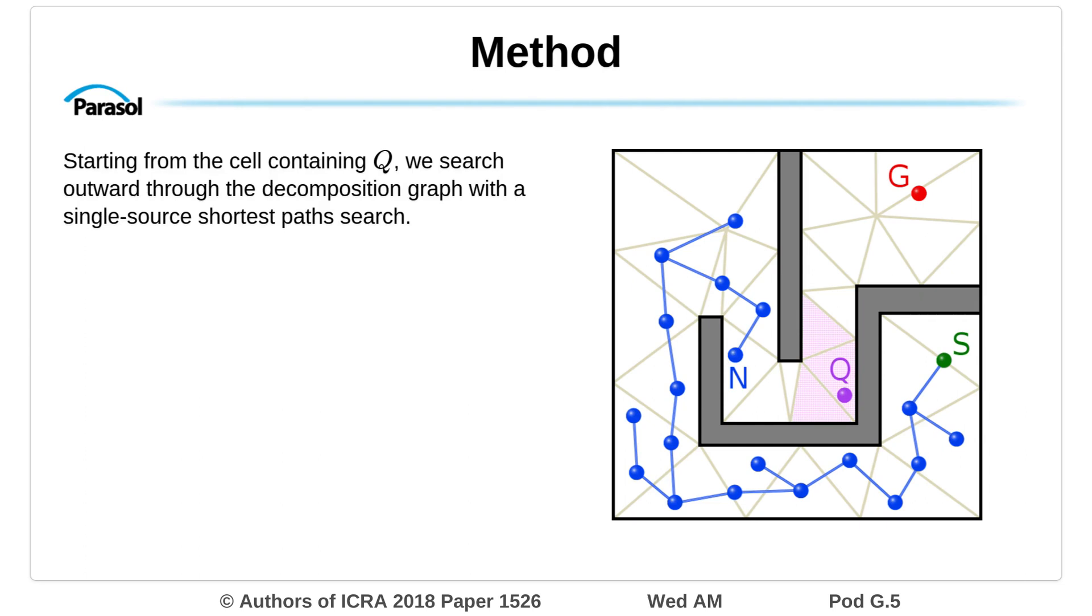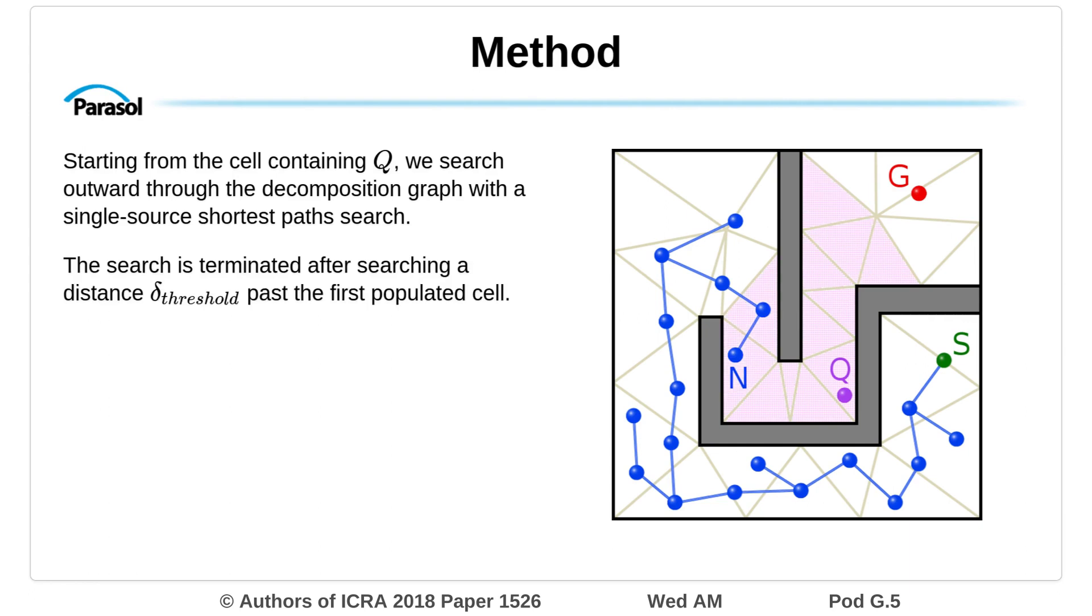Starting from the cell containing Q, we search outwards through the decomposition graph with a single source shortest path search. The search is terminated after searching a distance delta threshold past the first populated cell.